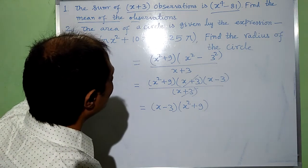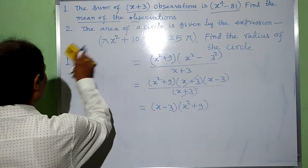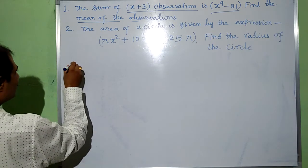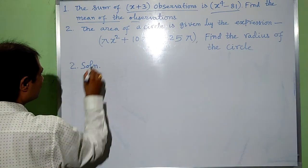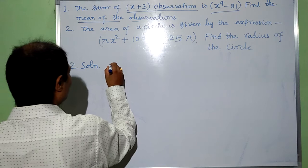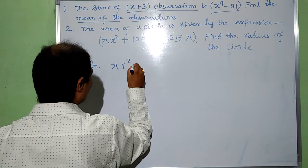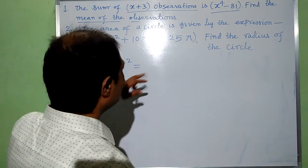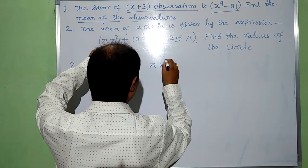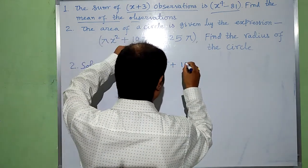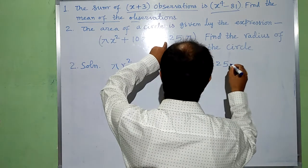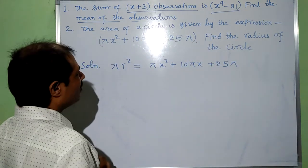Now the second question: the area of a circle is given by the expression pi x squared plus 10 pi x plus 25 pi. This is the area of the circle.